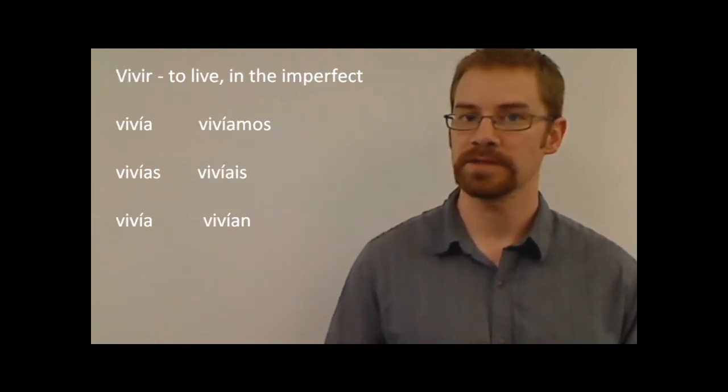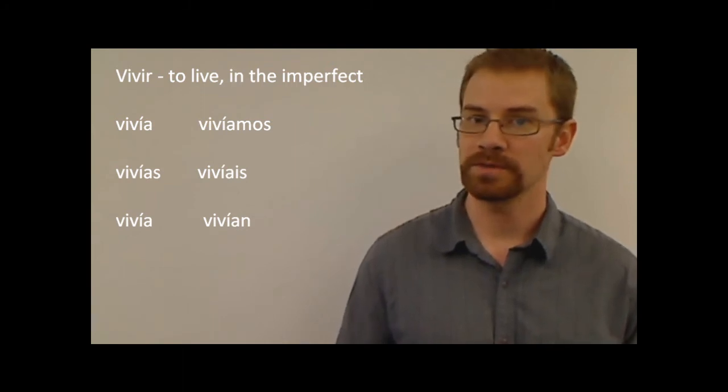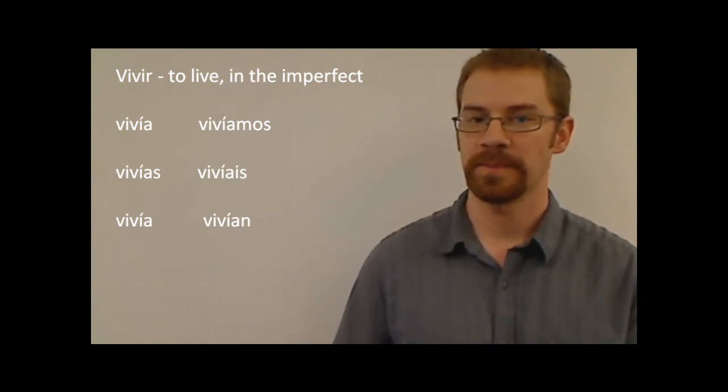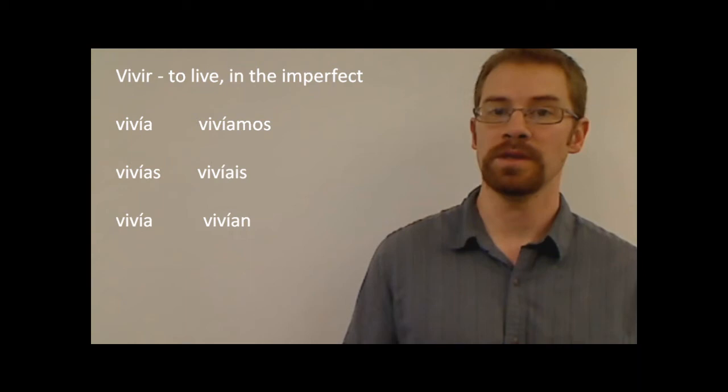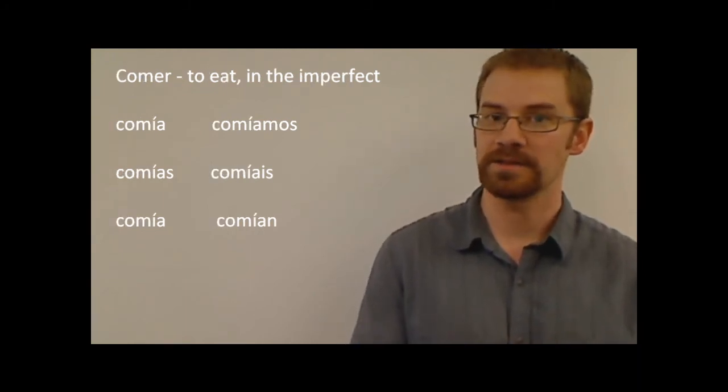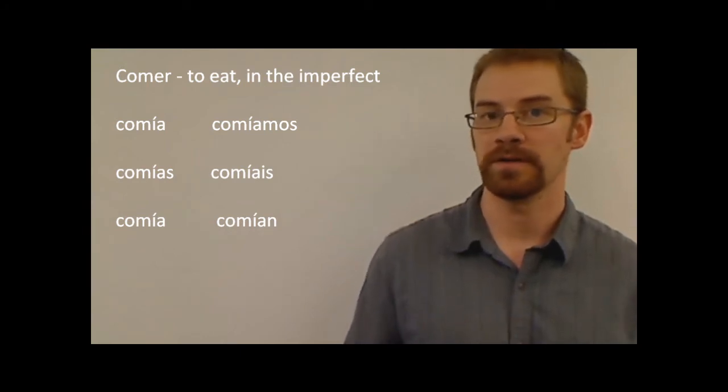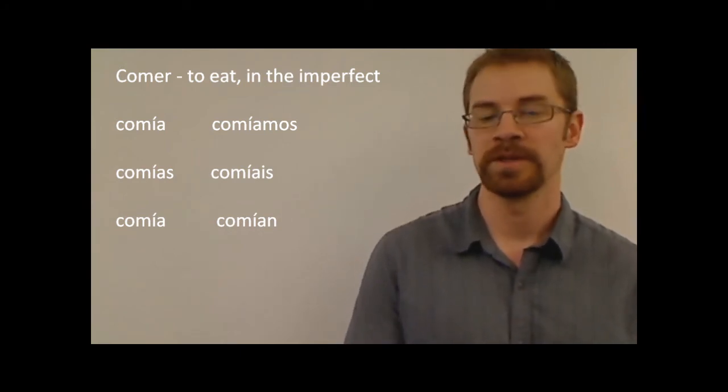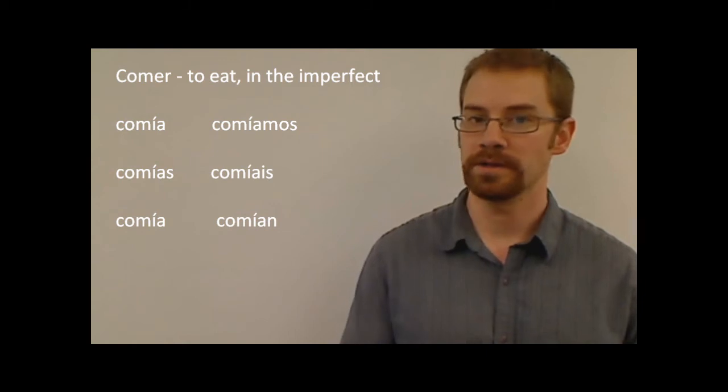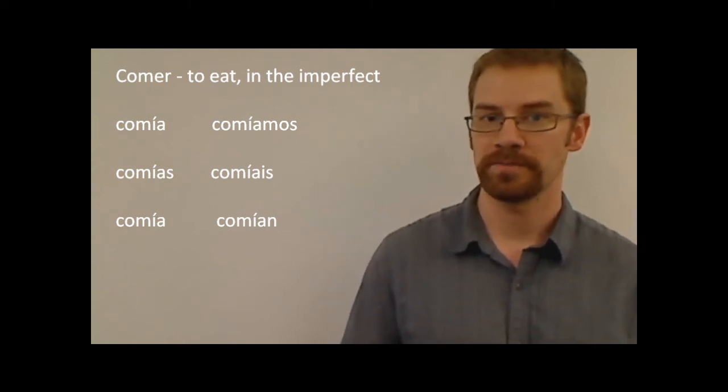Let me give you vivir really quick too. Vivía, vivías, vivía, vivíamos, vivíais, vivían. Right away, you should notice that ER and IR verbs, the conjugations are exactly the same in the imperfect. And the preterite works the same way. Regular ER and IR verbs are the same in the preterite. And then in the imperfect, regular ER and IR verbs are also exactly the same, which makes it nice.